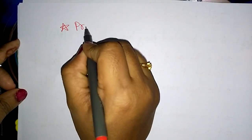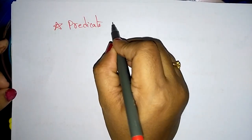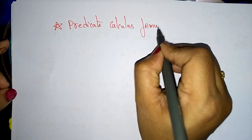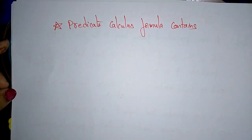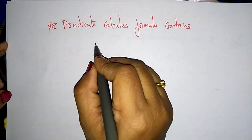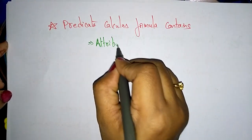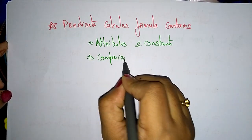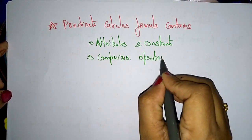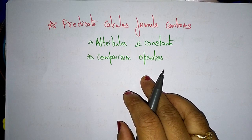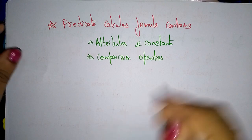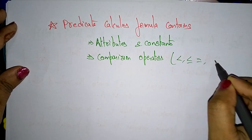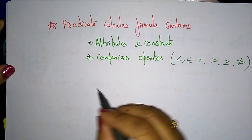Now let us look at predicate calculus formulas. The predicate calculus formula contains attributes and constants, and comparison operators. The comparison operators are: less than, less than or equal to, equal to, greater than, greater than or equal to, and not equal to.